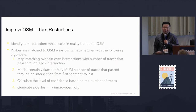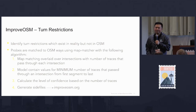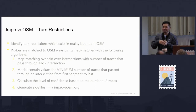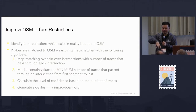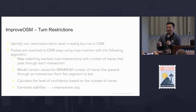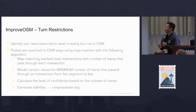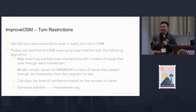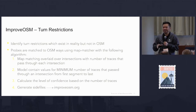For turn restrictions, we take the probe data, lay it over an intersection, and look for the start segment and the end segment. We look for the number of times the probes are not traveling over to a side of the road. Let's say we're at an intersection and we plot down hundreds of probe data points - you can see a lot of people are either going straight or going right, with very little to no left turns. With a level of confidence, we can show there's probably a sign there that says there's no left turn. We calculate the level of confidence, generate shapefiles, and then import it into Improve OSM.